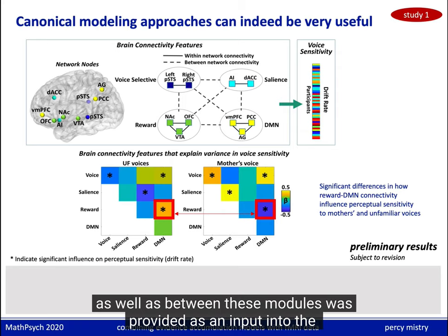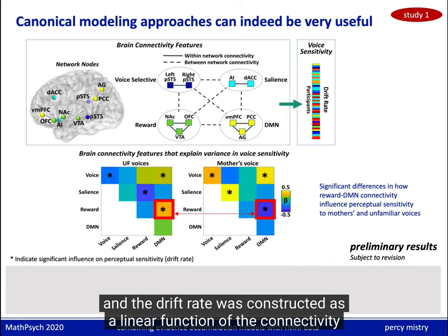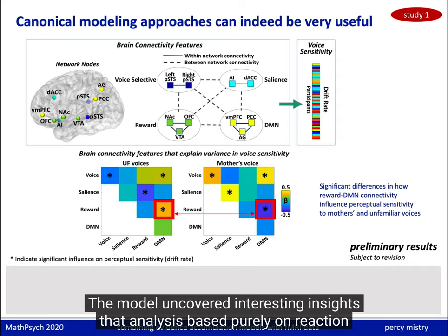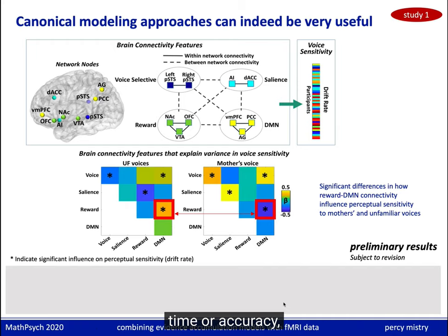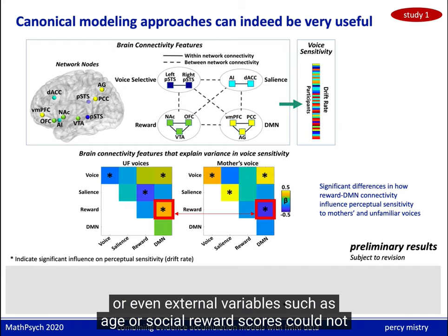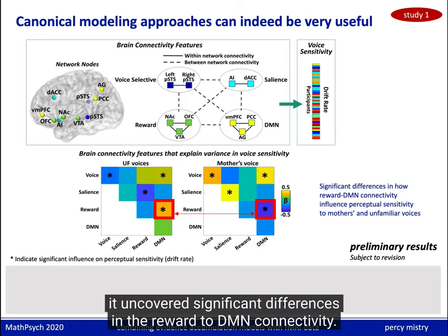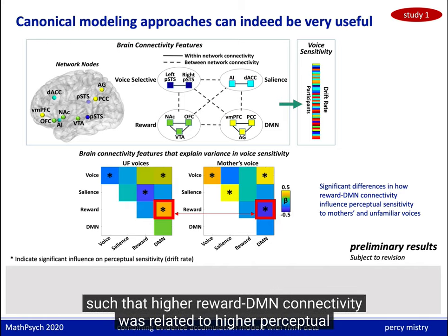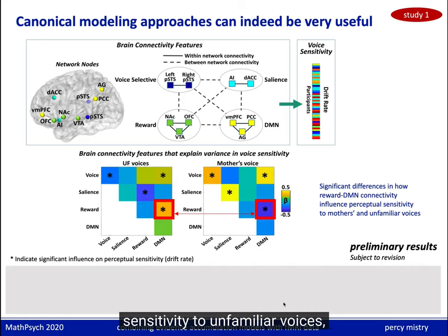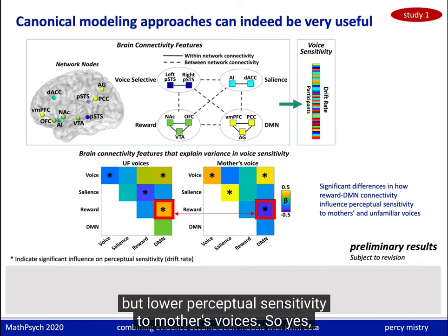The connectivity within and between these network modules was provided as input into the drift rate model, and the drift rate was constructed as a linear function of their connectivity matrices. The model uncovered interesting insights that analysis based purely on reaction time, accuracy, or even external variables such as age or social reward scores could not identify. Specifically, it uncovered significant differences in the reward-to-DMN connectivity, such that higher connectivity was related to higher perceptual sensitivity to unfamiliar voices but lower perceptual sensitivity to mother's voices.